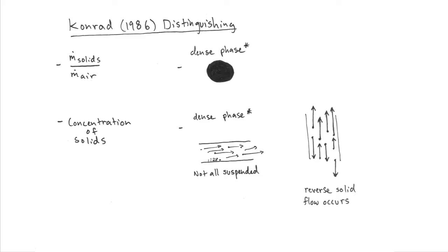He specifically noted that in dense phase transport, at some point in the pipe, the entire cross-sectional area of the pipe would be filled with solids. He also noted that in dense phase transport, some particles may settle out in horizontal pipes.